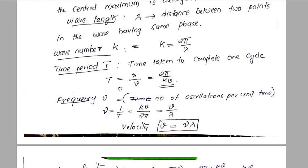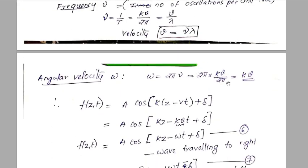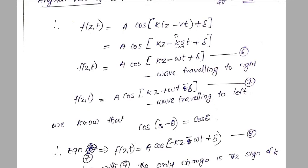Frequency will be the inverse of the period, that is kv over 2π, and since k over 2π equals 1 over lambda, we get ν equal to v over lambda — that is, velocity equals frequency times lambda. We can also define the angular frequency omega, which equals 2π times the linear frequency ν, giving omega equal to kv.